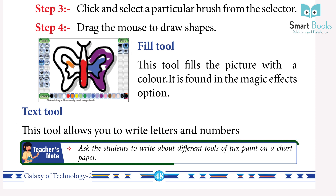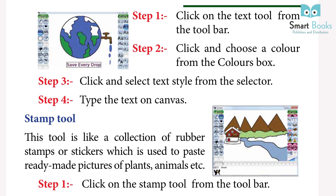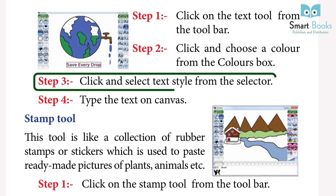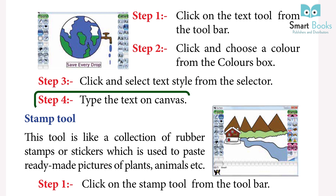Teacher's note: Ask the students to write about different tools of Tux Paint on chart paper. Using the Text Tool — Step 1: Click on the Text Tool from the toolbar. Step 2: Click and choose a color from the colors box. Step 3: Click and select text style from the selector. Step 4: Type the text on the canvas.